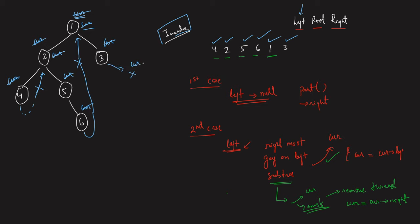At three, there's no left, so print three and move right. Three's right is null, so traversal ends. You got the complete inorder traversal. The key insight is: I created threads to come back to the root and always erased them — don't leave threads, otherwise the binary tree will be corrupted.